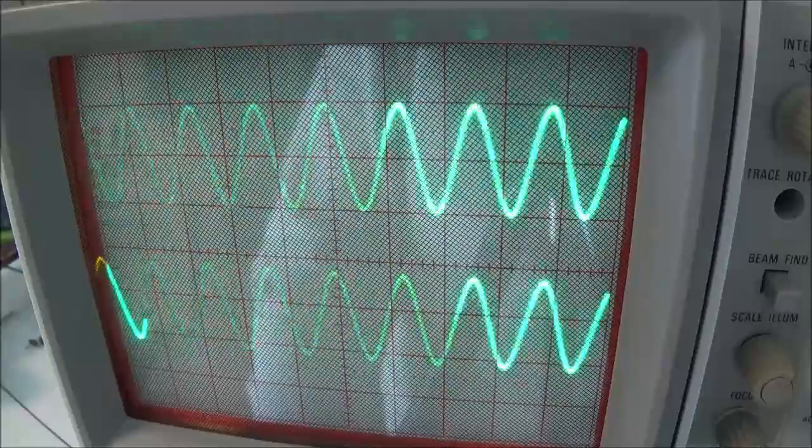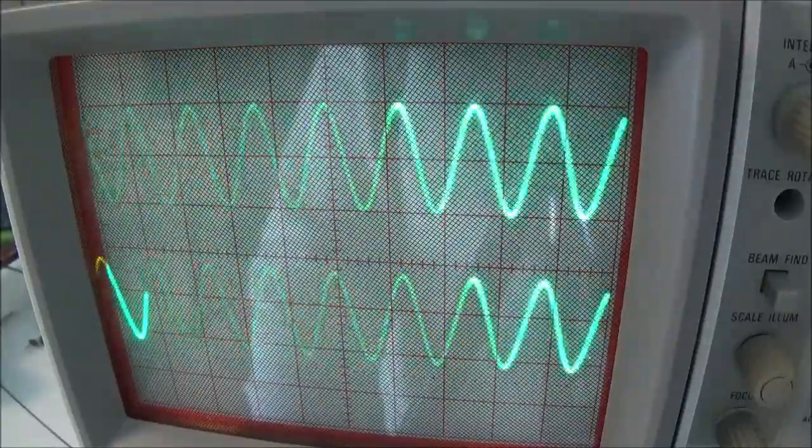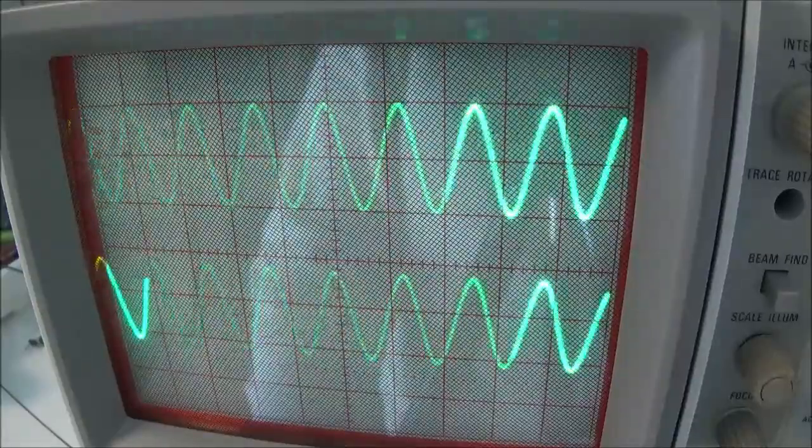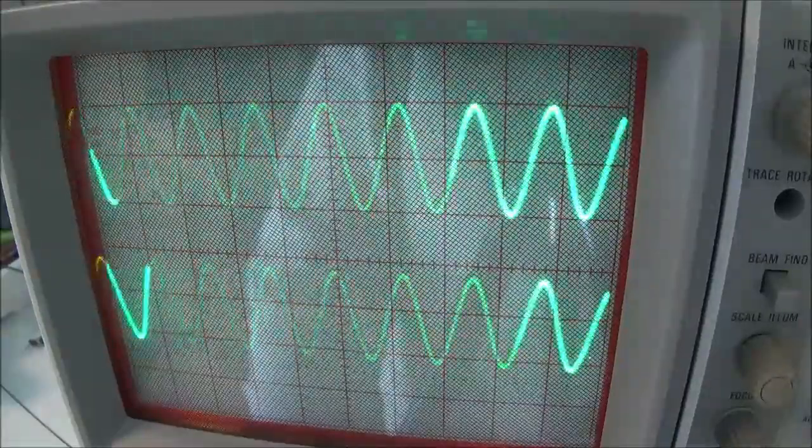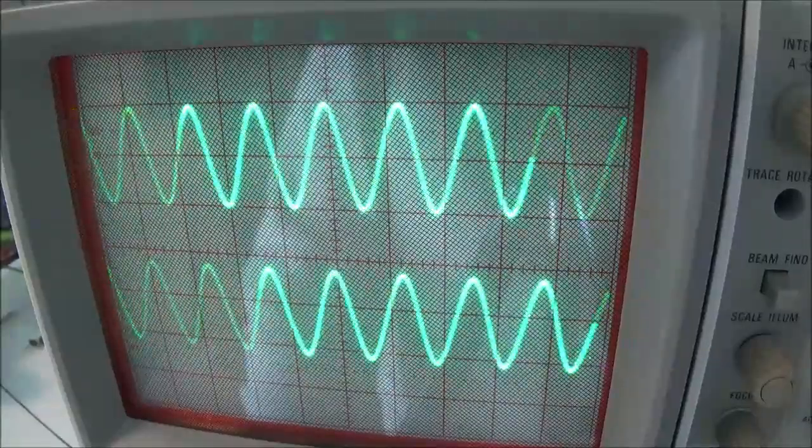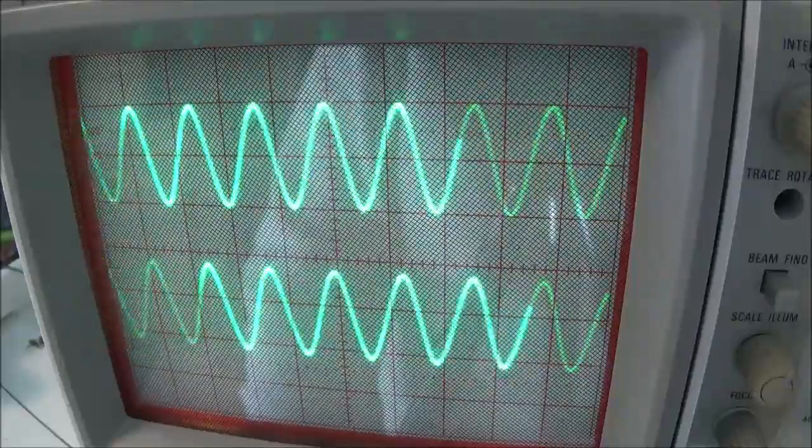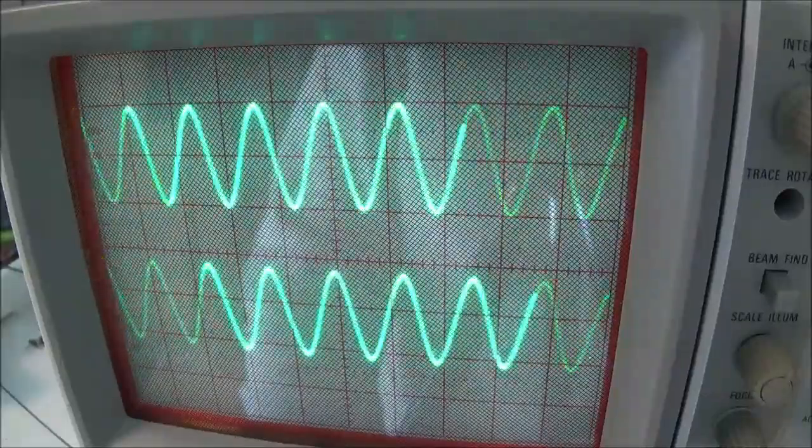So again, just to sum this up: I would use the alternate mode for higher frequencies and the chop mode for lower frequencies. You just got to experiment around a little bit with your oscilloscope. That's what it's there for and that's how you're going to learn it.